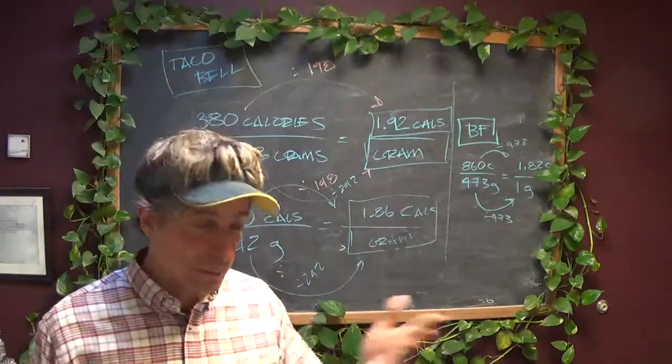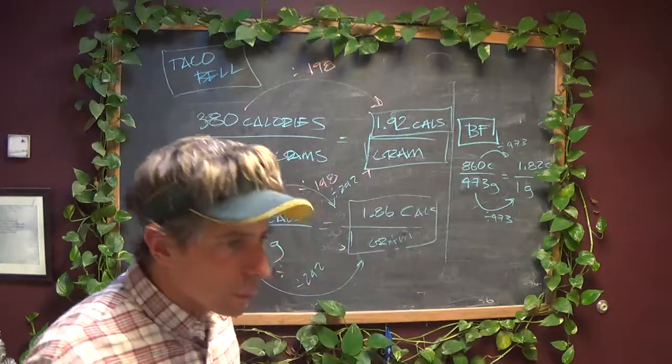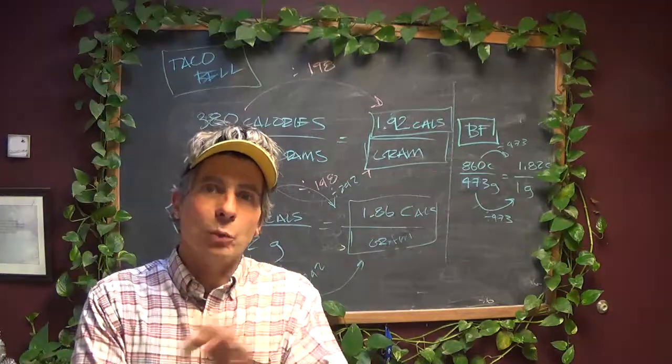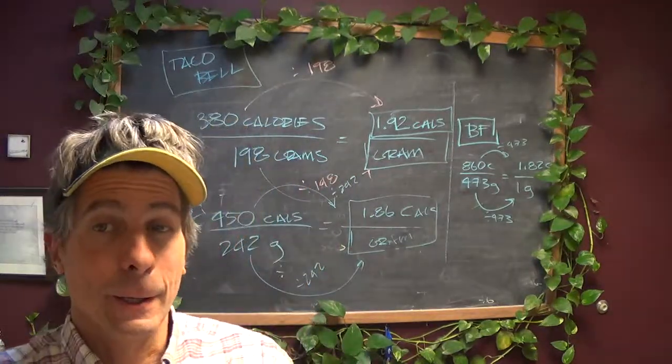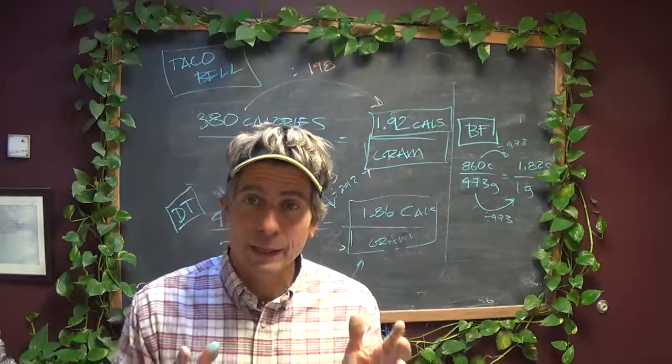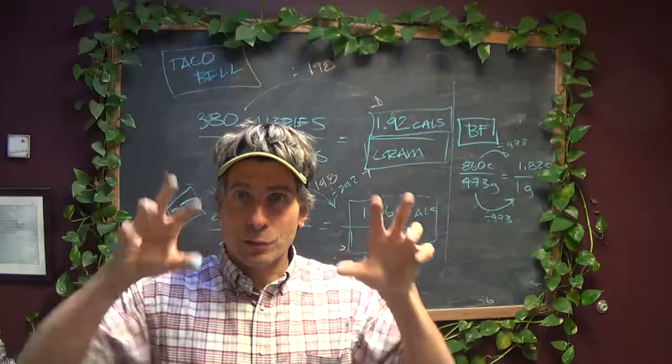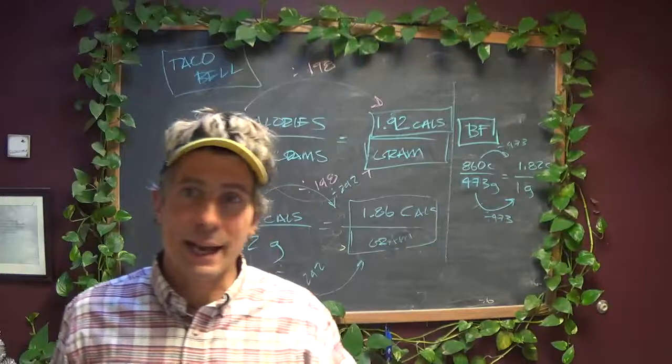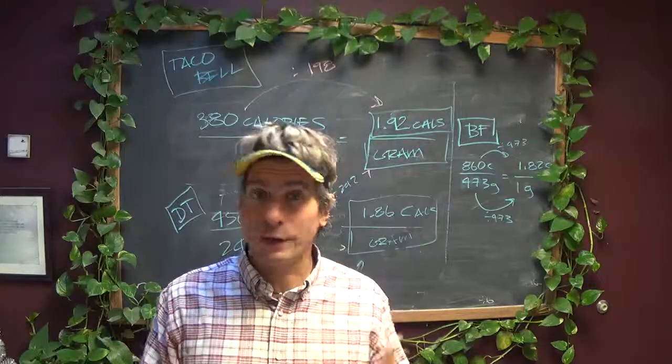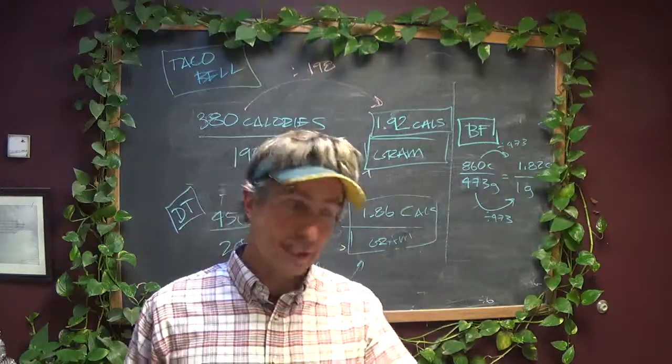Question seven asks, explain why using unit rate comparison in a case like this is fairer than not using it. Well, because if you actually use it, you're getting an apples to apples comparison. When people are comparing two things fairly, they are said to compare apples to apples, which means you're viewing data through the same lens of detail. When you look at just how many calories one thing has over the other, you're not viewing why it has more calories. It might not be because it's less healthy, it might just be because there's more food.